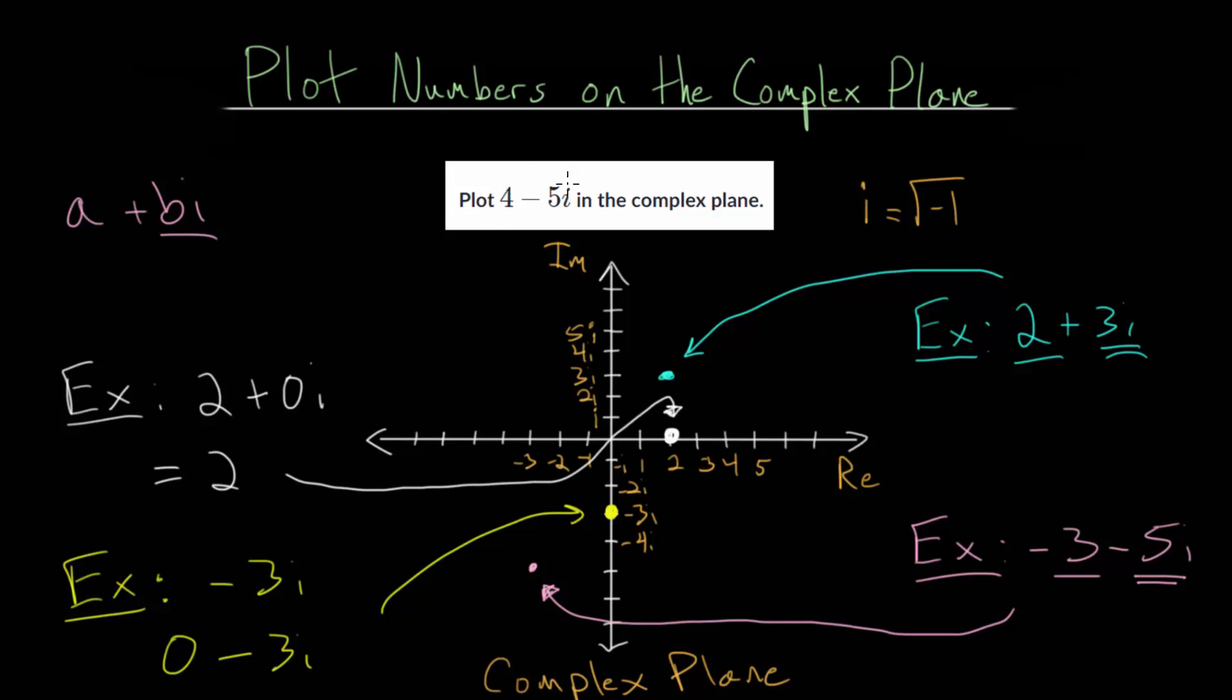For this problem, we need to plot 4 minus 5i in the complex plane. To do that, we're going to go over 4 in our real direction—it's positive 4—and then we're going to go down 5 in our imaginary direction since we are subtracting 5i. So we go right 4, and then down 5 units in that imaginary direction. This 4 minus 5i is right here on our complex plane.